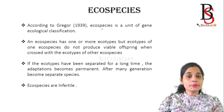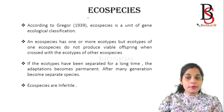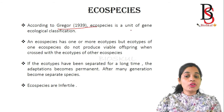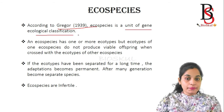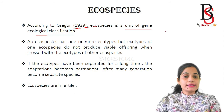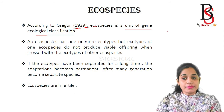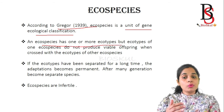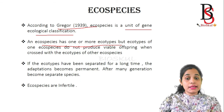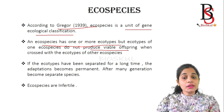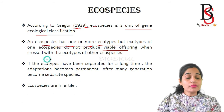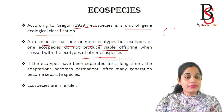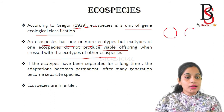Now let us come to Ecospecies. According to Grigor in the year 1939, Ecospecies is a unit of gene ecological classification. Ecospecies has one or more types of ecotypes. But ecotypes of one Ecospecies do not produce viable offspring when crossed with ecotypes of another Ecospecies. So within an Ecospecies, there are different types of ecotypes present.